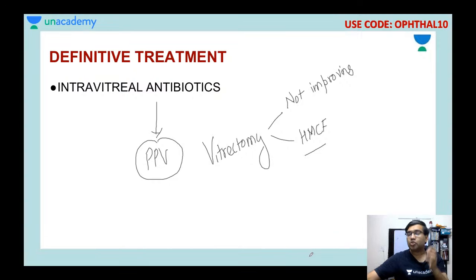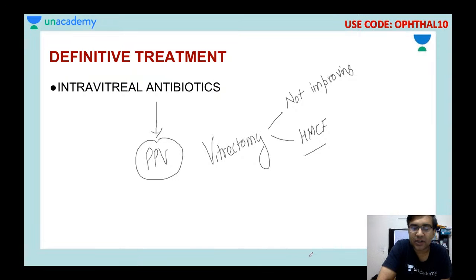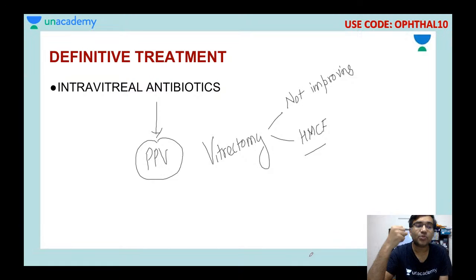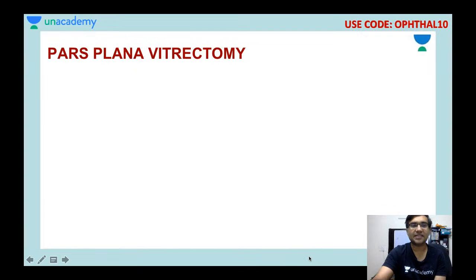Other ocular emergencies include: rhegmatogenous retinal detachment, primary angle-closure glaucoma, corneal perforation, central retinal artery occlusion, and ocular ischemic syndromes. If you perform an intravitreal injection or pars plana vitrectomy and obtain some vitreous exudate, send it for culture and sensitivity, and then start appropriate antibiotics based on the sensitivity result.